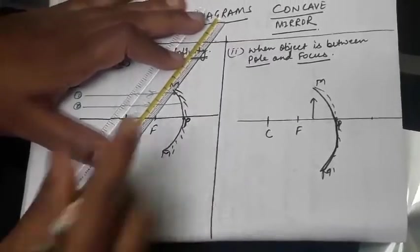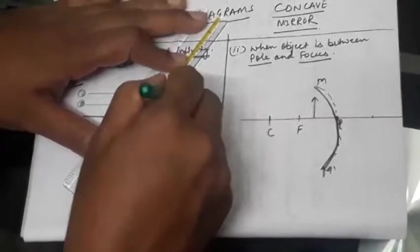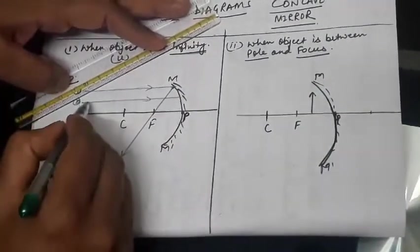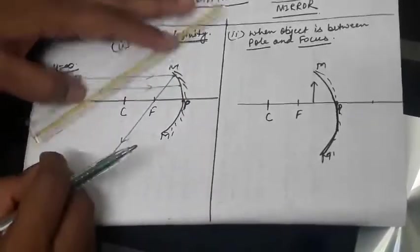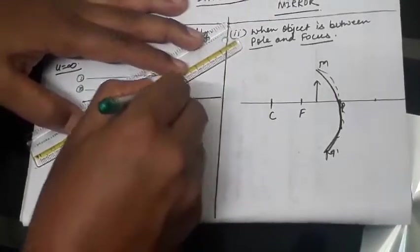The ray of light after reflection will converge towards focus. And rule number second, then ray number two also strikes the mirror at this different point, and it will again according to rule, reflect back on focus.